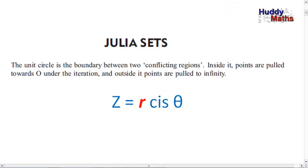Here's a comment just to start this. I want you to check that you've discovered this already: the unit circle is a boundary between two conflicting regions. Inside it, points are pulled towards zero under the iteration — they converge — and outside it, points are pulled to infinity. You might look at the importance of the modulus here, the size of the complex number when you square it. If it's bigger than one it's going to diverge; if it's less than one it's going to converge; if it equals one it's right on that boundary, that unit circle.